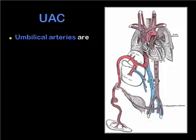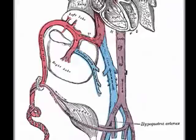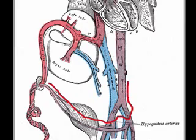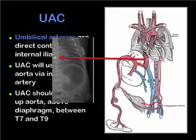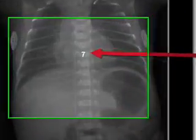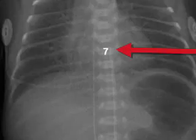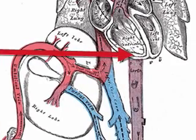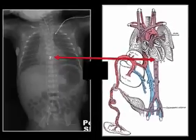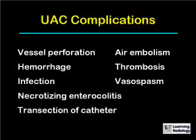The course of umbilical artery catheters is through the umbilical arteries, down slightly into the internal iliac arteries, then up the descending aorta into the thoracic aorta. The tip of this umbilical artery catheter is at the level of T7, which corresponds roughly to the point shown on the diagram, except it would be behind the heart.